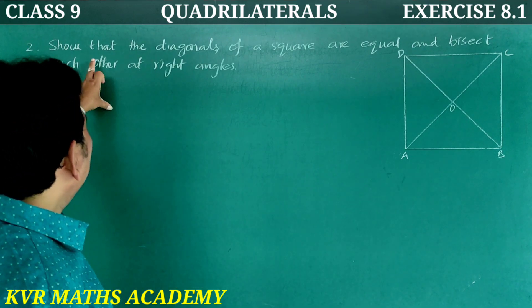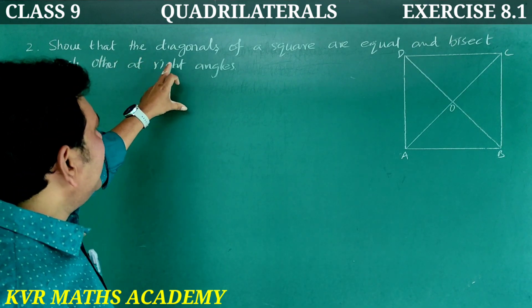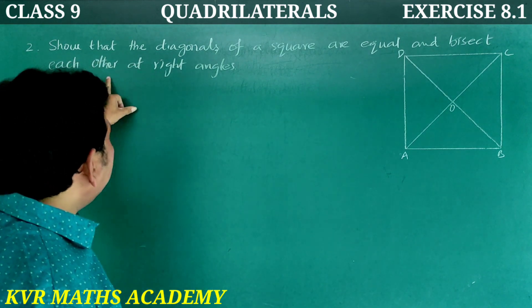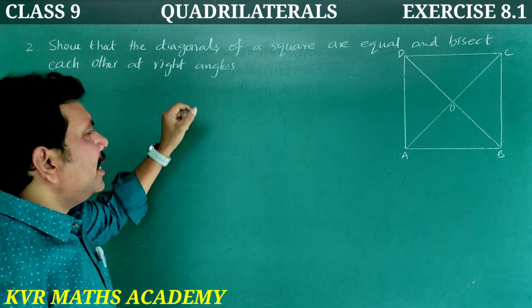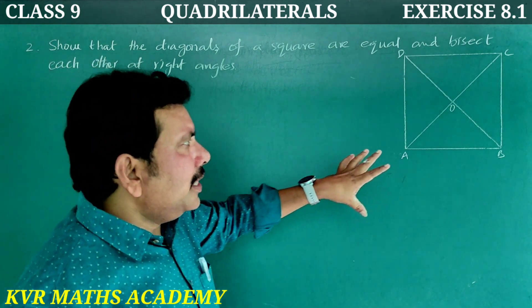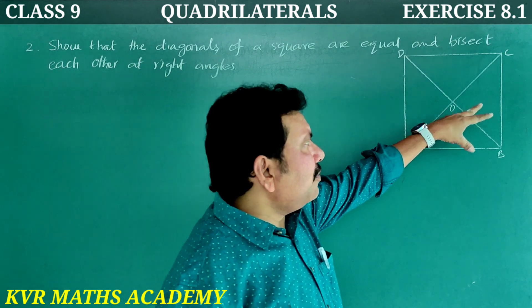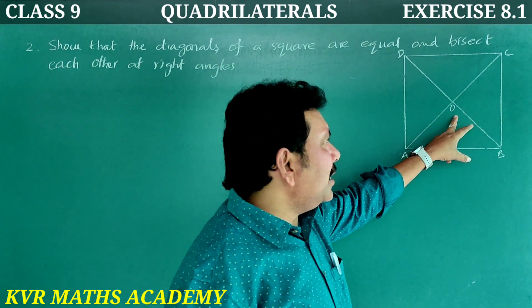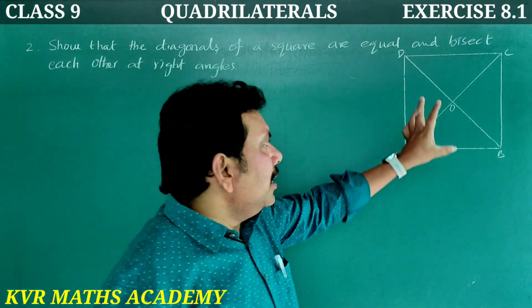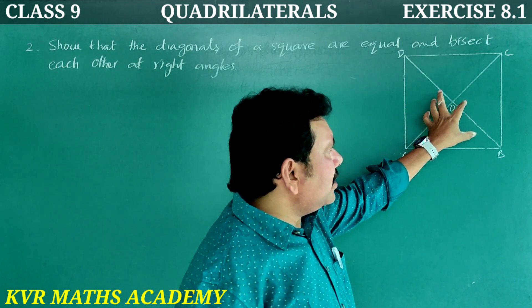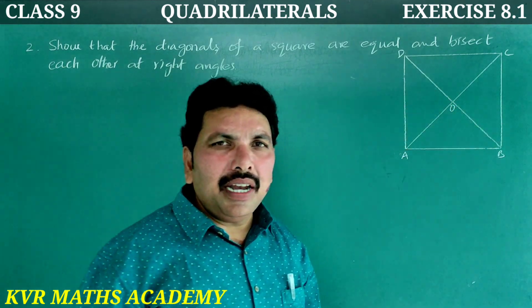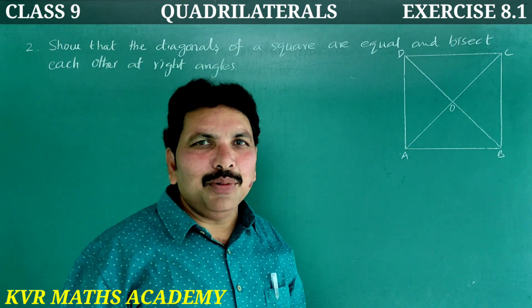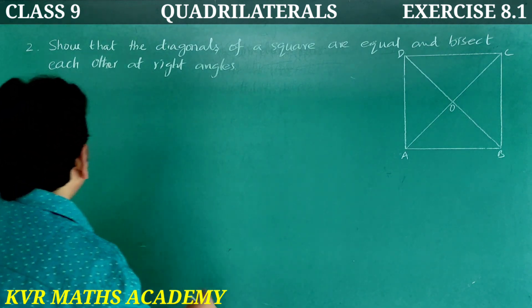Next, second question: Show that the diagonals of a square are equal and bisect each other at right angles.